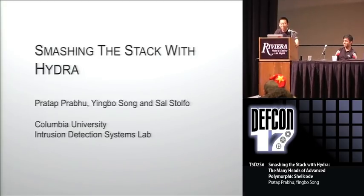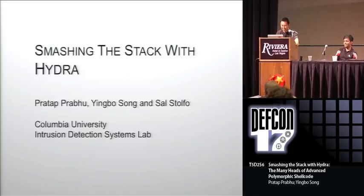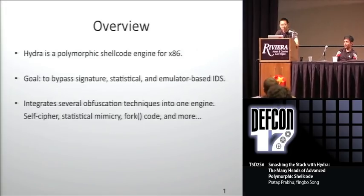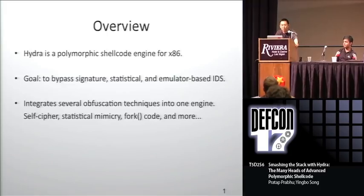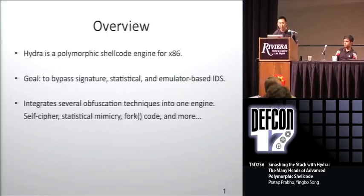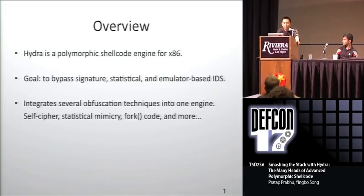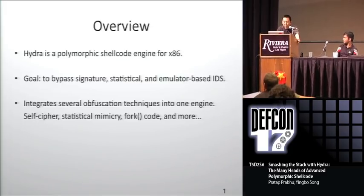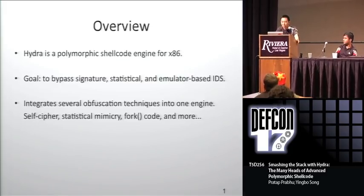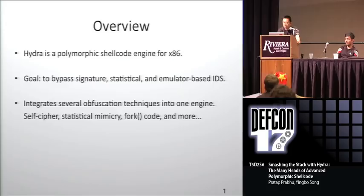So heap your scorn or praise upon him at the end. An overview of our project: Hydra is a new polymorphic shellcode engine for x86 platforms. We designed this to bypass signature, statistical, and emulator-based IDS systems. It does this by integrating several obfuscation techniques into one engine, such as self-ciphering, statistical memory, forking shellcode, and much more. I'll talk about these in today's talk.